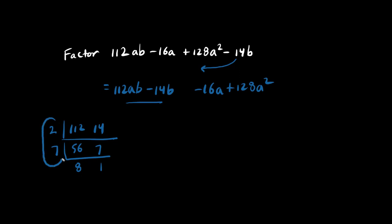So the GCF is 2 times 7, which is 14. So here we go. We have 14, and we have a b as well. Fits into both these terms. 14b times 8a is the first term, and 14b times negative 1 is the second term.